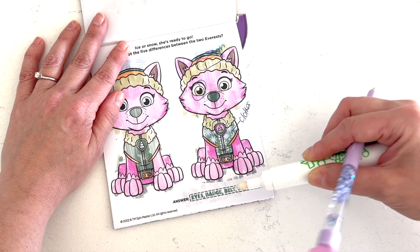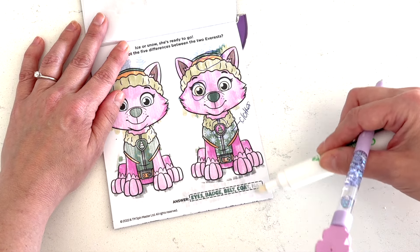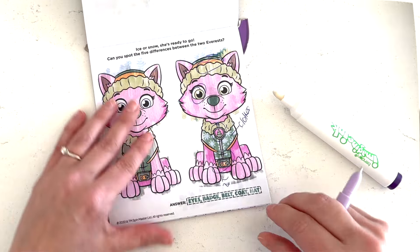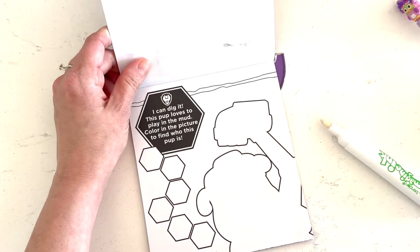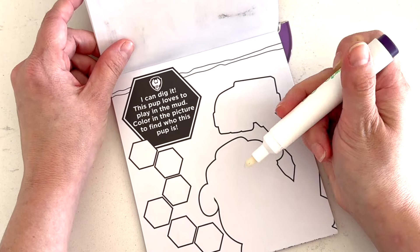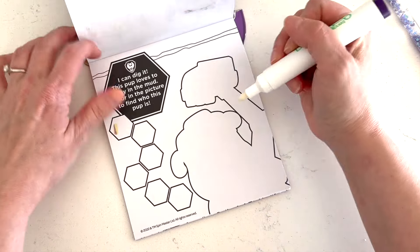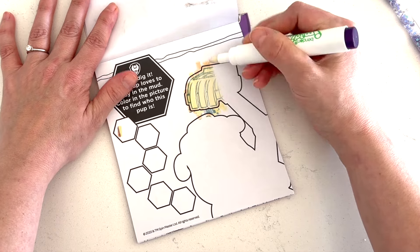One, two, three, four. And then what else is different? Okay. Let's see what the answers say. Eyes, badge, belt, and coat and hat. Oh, the belt does have swirly lines here. Okay. Next page.